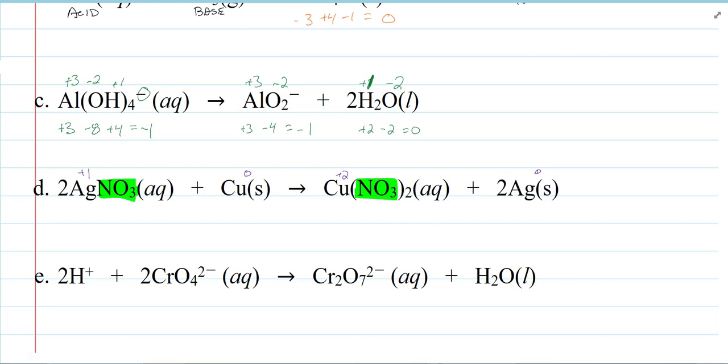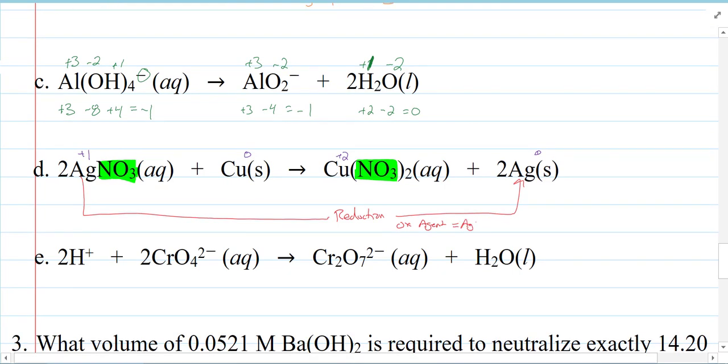Who's oxidized? Who's reduced? Well, it looks like, here's my reduction. And it's also my ox agent. So silver nitrate is my agent. Silver gets reduced. Oxidation. And it's also my reducing agent.